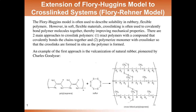The first extension that we'll talk about is the extension to cross-linked systems. The Flory-Huggins model is often used to describe solubility of gases and liquids in rubbery flexible polymers, or alternatively, describe solution thermodynamics of polymer solutions. However, in many soft, flexible materials used in applications where membrane or barrier properties are important, those polymers are often covalently cross-linked. That is, there are covalent linkages between the polymer chains that help provide mechanical reinforcement and keep the polymer from dissolving in the solvent to which it might be exposed.